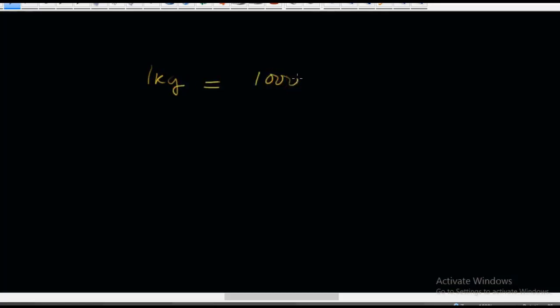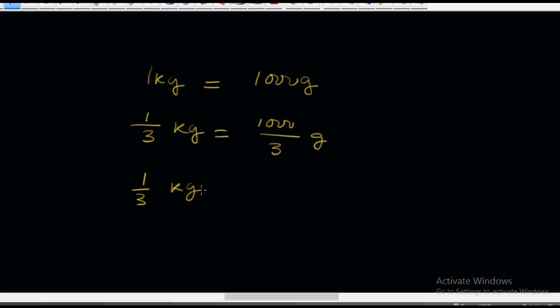What if we divide by 3? We say 1 kilogram is equal to 1,000 grams, and then we divide by 3. That is, 1/3 kg is equal to 1,000/3. If you divide 1,000 by 3, you get 333.3 grams. So 1/3 kg is equal to 333.3 grams.